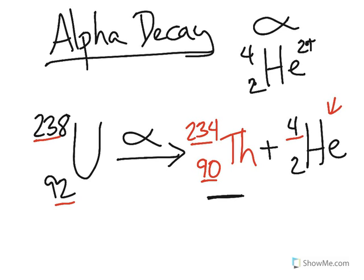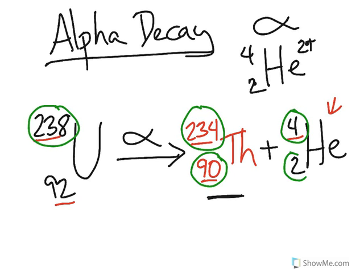Understand that if I add the mass numbers together, I get the original mass number. If I add the atomic numbers together, I get the original atomic number. And that's it. I'll take a look at the next lecture.